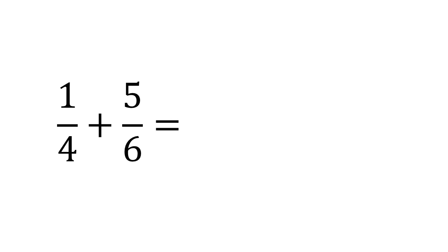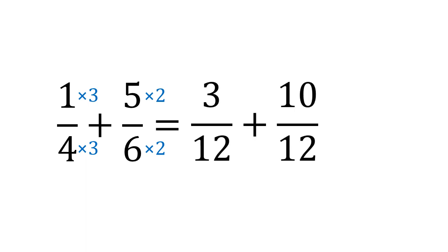Let's try one quarter add five sixths. There's no whole number we can multiply four by to make six or six to make four, so we need to change both. Four and six both go into 12 — that's their lowest common multiple. Four goes into 12 three times, so we multiply top and bottom by three. Six goes into 12 twice, so we multiply top and bottom by two. Our equivalent fractions are three twelfths and ten twelfths, which add together to give 13 twelfths — a top-heavy fraction, which is fine. You could convert it to one and one twelfth, but 13 twelfths is a perfectly good answer.